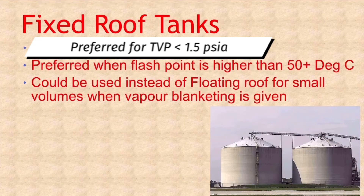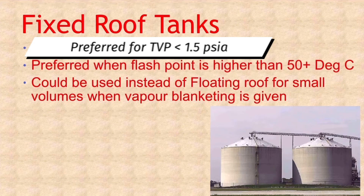The same could be utilized with internal floating roofs where the climatic conditions prevent the use of external floating roof alone. The allowable limit of 1.5 psi of true vapor pressure is an approximate number and could vary from company to company. Roof tanks are also used for low volatile products whose flash point is higher than 50 plus degrees Celsius.